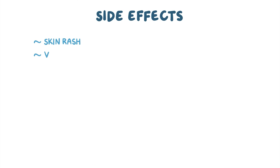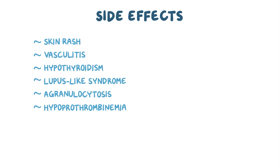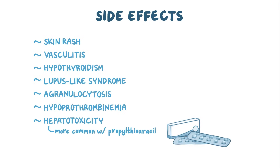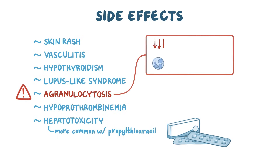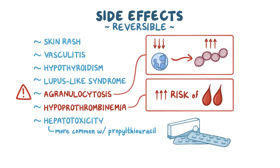The main side effects of these medications include skin rash, vasculitis, hypothyroidism, lupus-like syndrome, agranulocytosis, and hypoprothrombinemia. These medications are also associated with hepatotoxicity, and this is more common with propylthiouracil use. Agranulocytosis is the most dangerous side effect since the decrease in neutrophils can make a person more susceptible to infections, while hypoprothrombinemia increases the risk of bleeding. These side effects are reversible, meaning they resolve once the medications are discontinued.